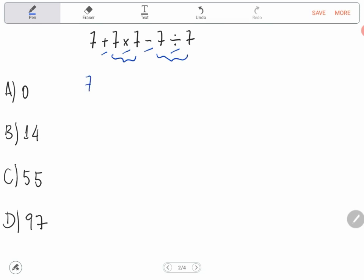Then we have 7 plus 7 times 7 is 49, minus 7 divided by 7 is 1.